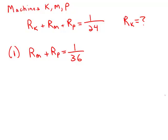This is interesting because combining it with the equation from the prompt, we can find the value of those terms. We get RK + RM + RP = 1/24, and RM + RP = 1/36, so RK + 1/36 = 1/24.